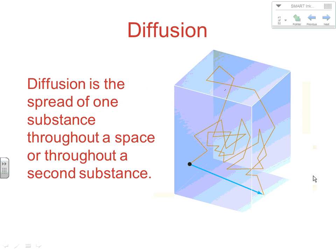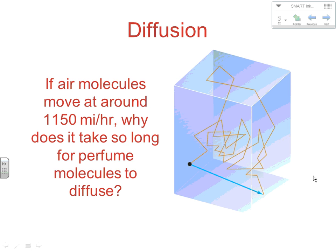What controls your rate of effusion is really about velocity, not particle size. Diffusion is how fast a substance spreads out in a space or throughout a second substance. What you're looking at is a particle moving all over the place and eventually ending up somewhere else — so how fast is it spreading out in the container? That's what diffusion is.